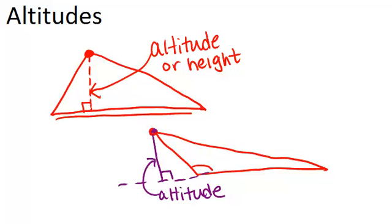In an obtuse triangle, even though this altitude is outside the triangle, the altitude from this vertex would be inside the triangle. So it's possible in one triangle for some altitudes to be outside and some to be inside.